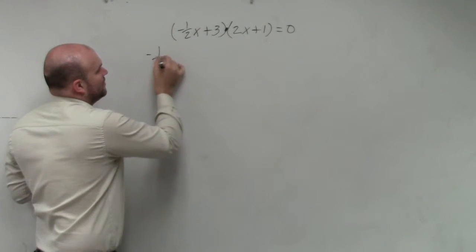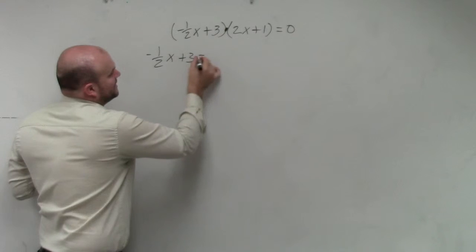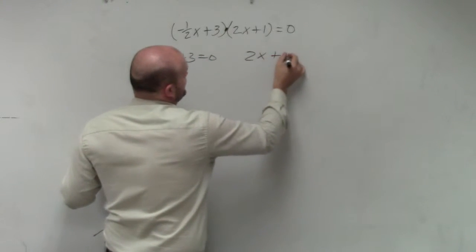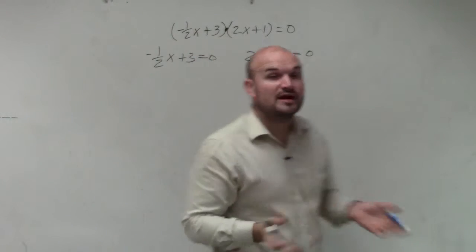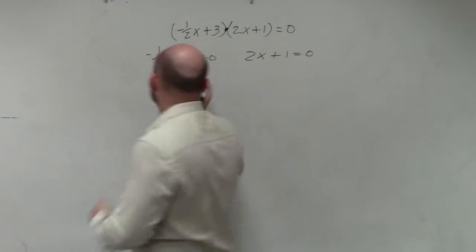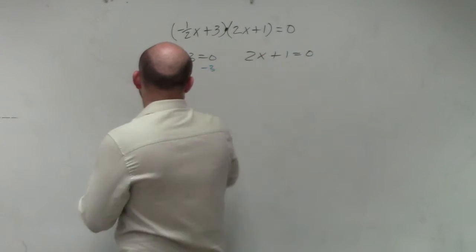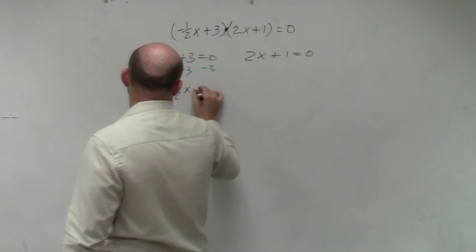All right, now we just take negative 1 half x plus 3 equals 0, and 2x plus 1 equals 0. So now we're just going to solve using our inverse operations. First thing I'll do is subtract 3 on both sides. So I have negative 1 half x equals negative 3.